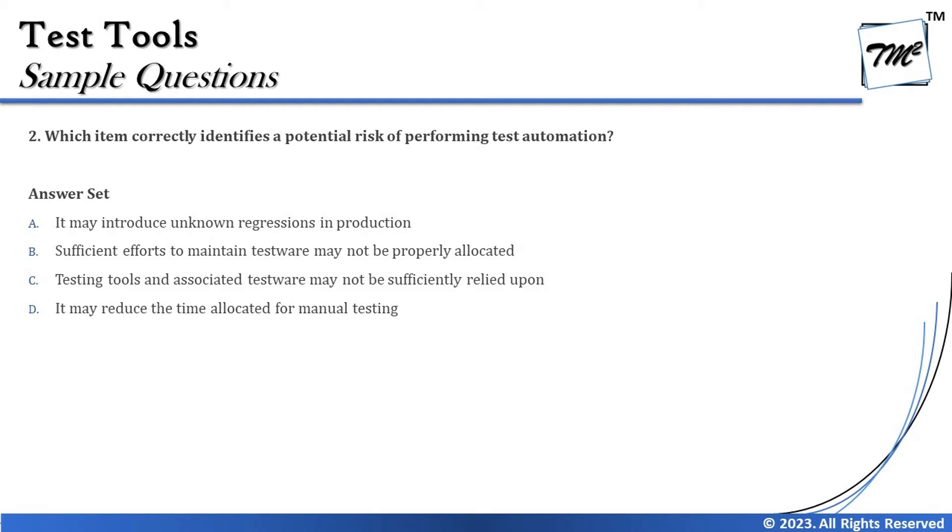A test tool helps minimize manual effort on test activities, so option A is not a risk introduced by the tool. Option B says sufficient efforts to maintain testware may not be properly allocated. In our risk discussion, we noted it is equally important for the manager to allocate cost, time, and effort to manage and maintain tools. Without proper resources or well-defined guidelines, there is certainly a risk involved in using the test tool.